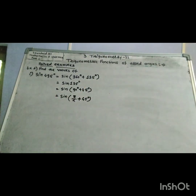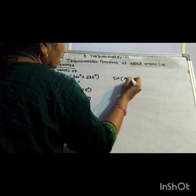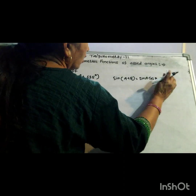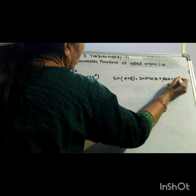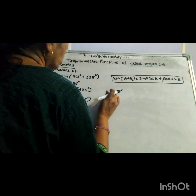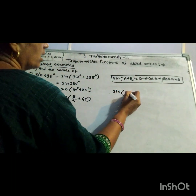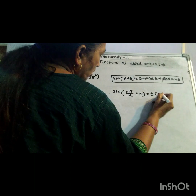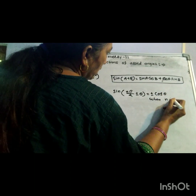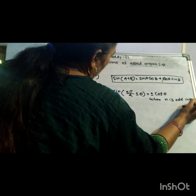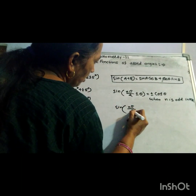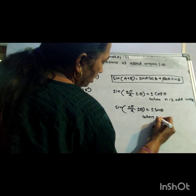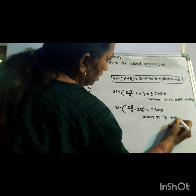The formula for sine addition is: sin(a + b) = sin(a)cos(b) + cos(a)sin(b). The allied angle formula is: sin(nπ/2 ± θ) = ±cos(θ) when n is an odd integer, and sin(nπ/2 ± θ) = ±sin(θ) when n is an even integer.